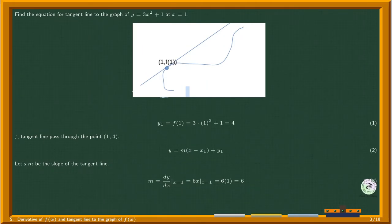The tangent line passes through the point (1, 4) and has a slope of 6. By substituting the information in the point-slope form we get y equals 6 times (x minus 1) plus 4, which is the equation of the tangent line at x equals 1.